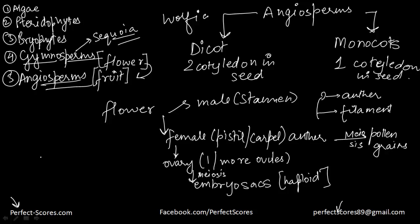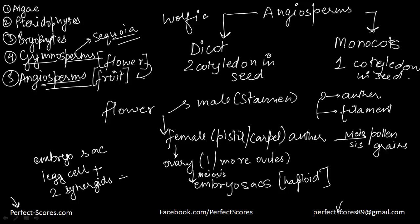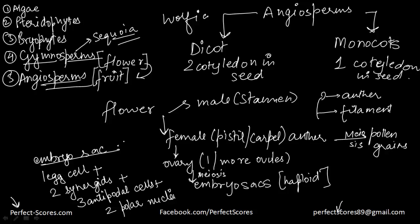Each embryo sac has a few components. It has a three-celled egg apparatus: one egg cell and two synergid cells, plus three antipodal cells and two polar nuclei. These polar nuclei are the ones that will eventually combine together to form a diploid secondary nucleus. Right now they are haploid because they have been produced by meiosis, but both of them will fuse and form the secondary nucleus later.